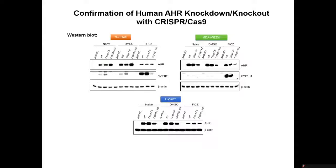These are western blots from three different cell lines — all triple negative breast cell lines. This one in particular is very aggressive; it's an inflammatory breast cancer with a survival rate of about two years if diagnosed. We're looking at AHR and the classic downstream gene CYP1B1. The wild type in the second lane shows plenty of AHR and a little bit of CYP1B1. We published about 10 years ago that CYP1B1 expression is dependent on AHR constitutive activity. But in the AHR knockout, the AHR and CYP1B1 expression are gone.